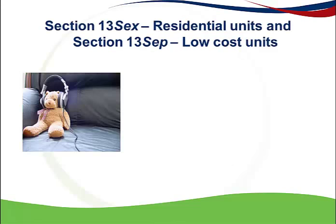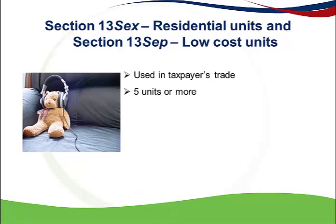The next allowance relates to residential accommodation used in the taxpayer's trade, where the taxpayer rents out the unit for income or provides accommodation to its employees. The taxpayer must own five units or more for these allowances to apply. A typical example of a unit would be an apartment in a block of apartments, but the residential accommodation can also be a standalone unit like a townhouse or a house. The units must be new and unused and the allowance is not apportioned. The section 13 SEP allowance on residential units is calculated at 5% of the cost price.